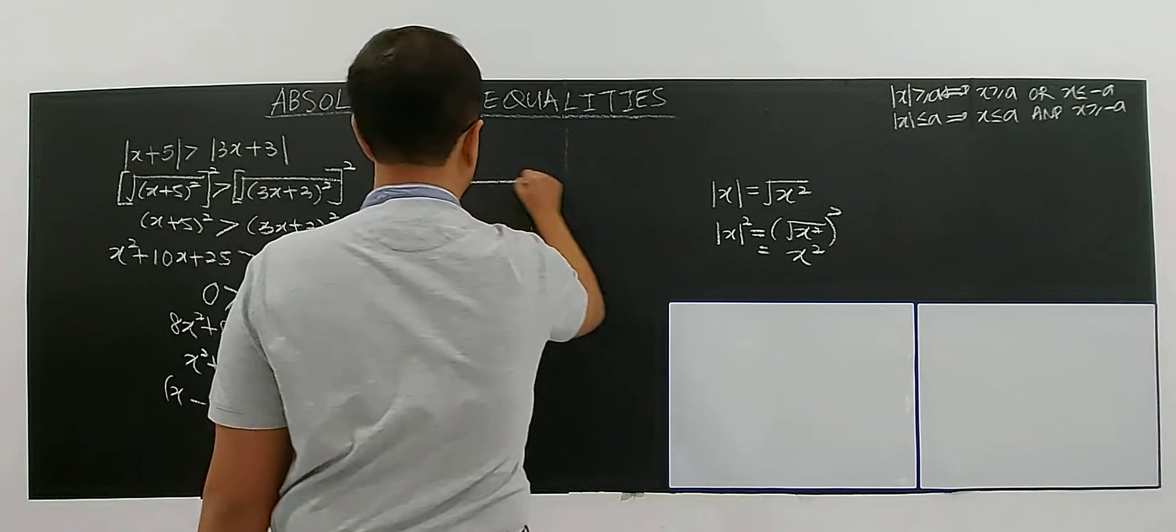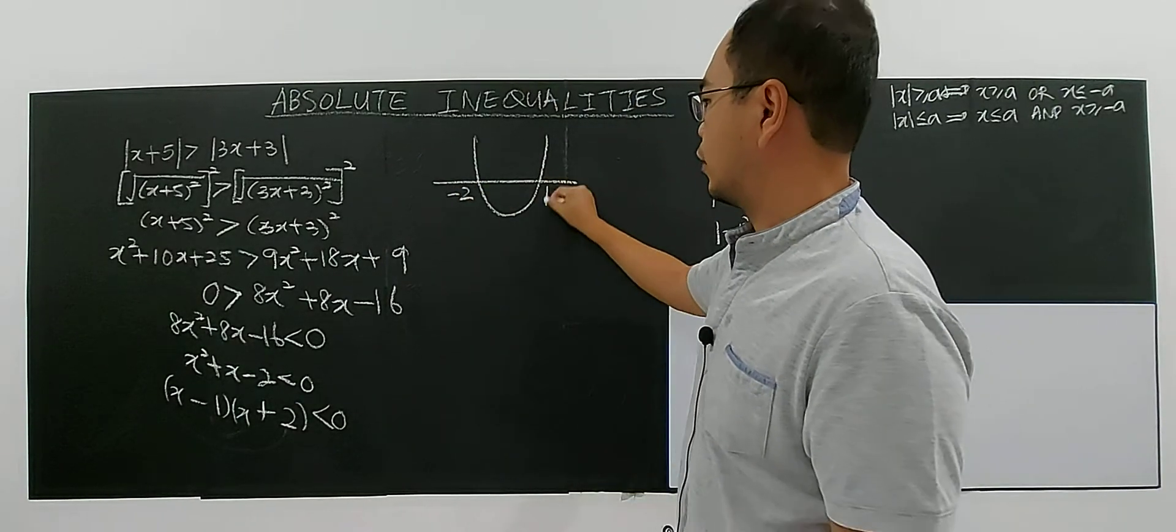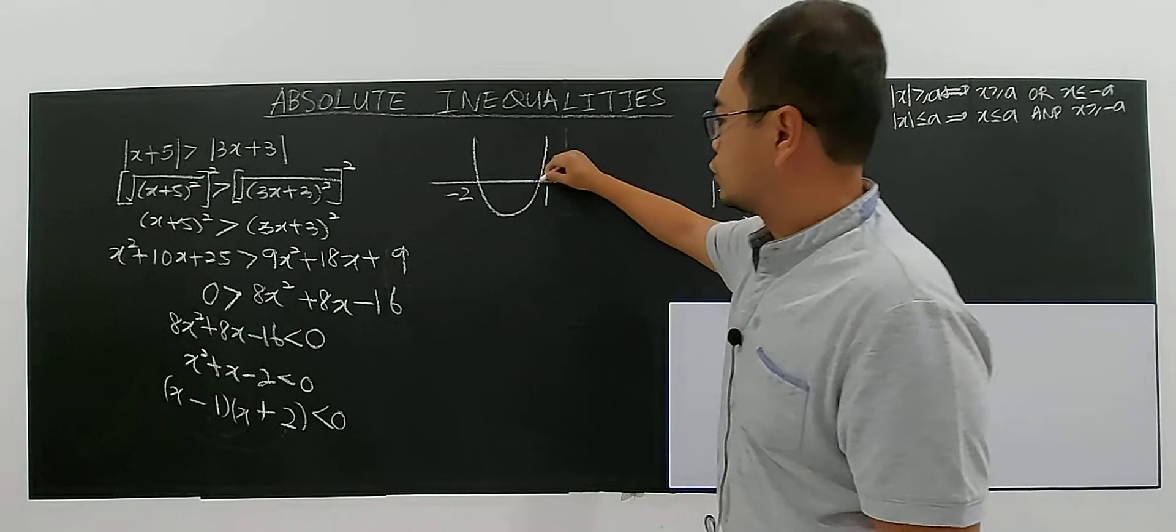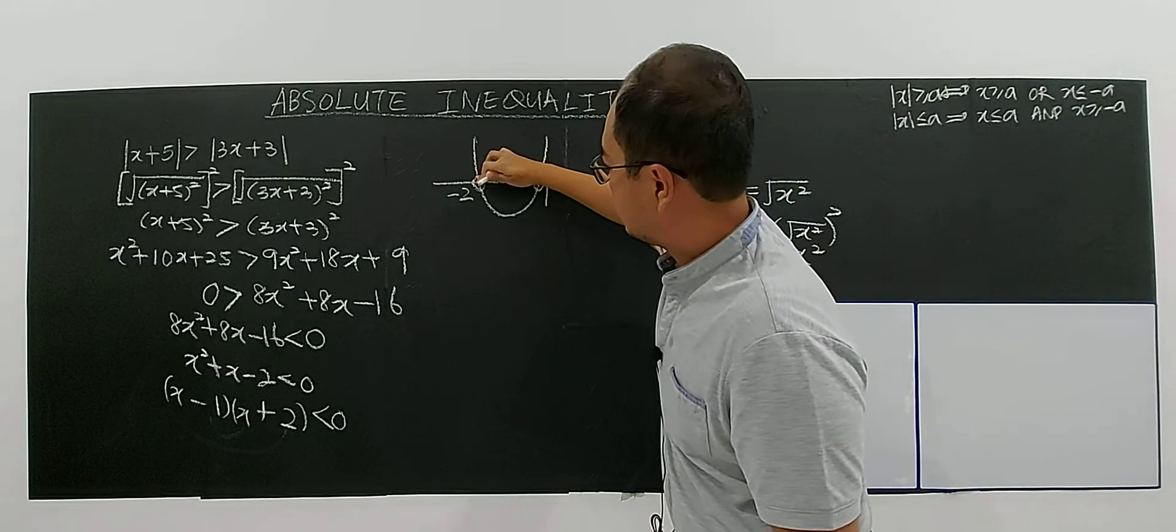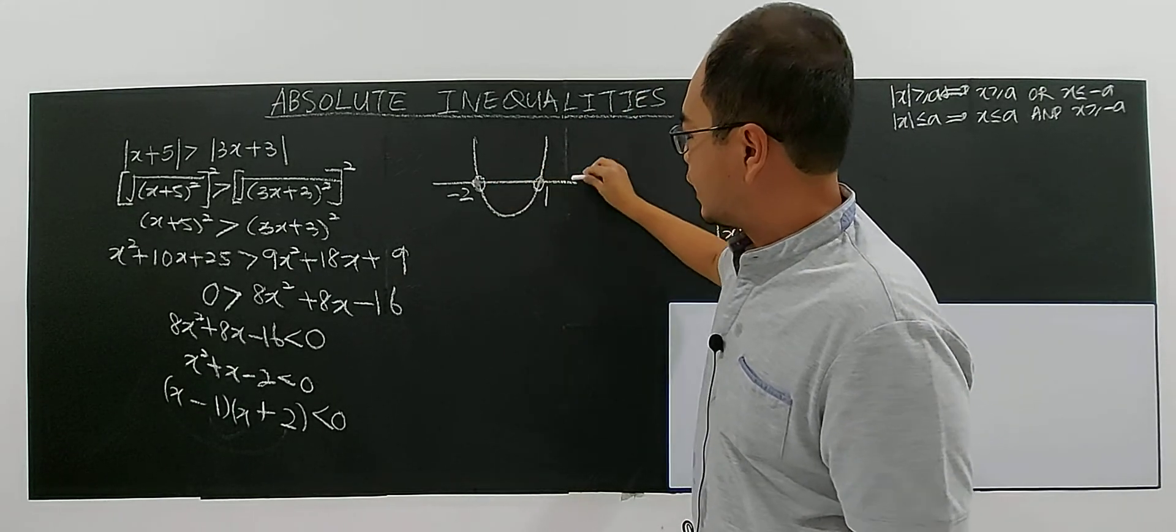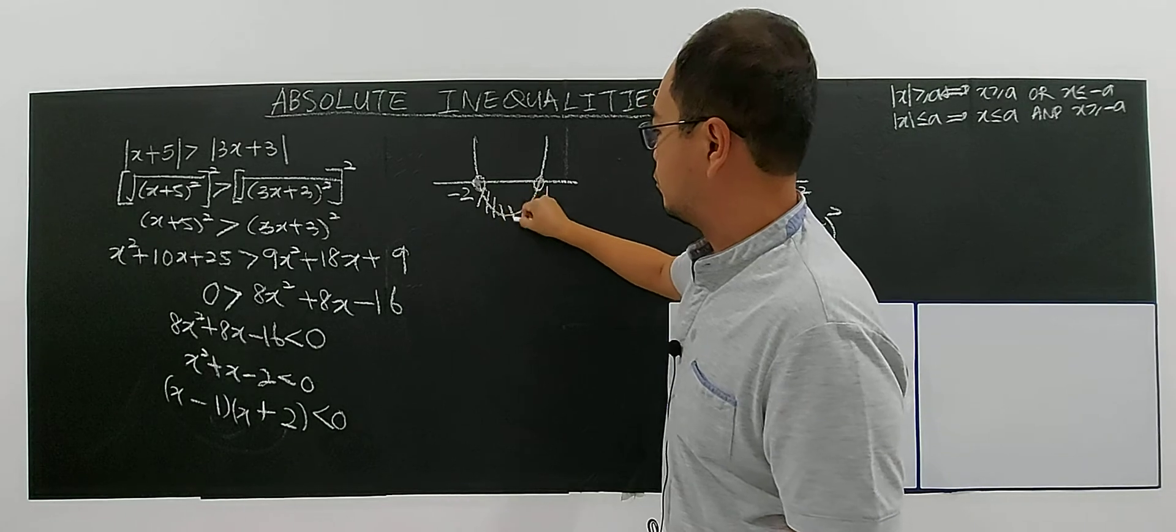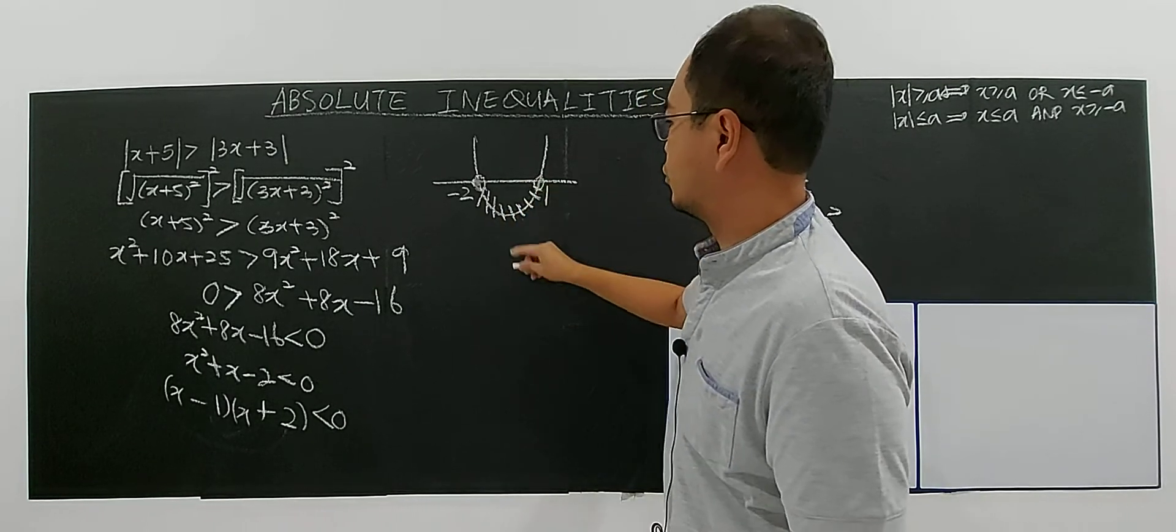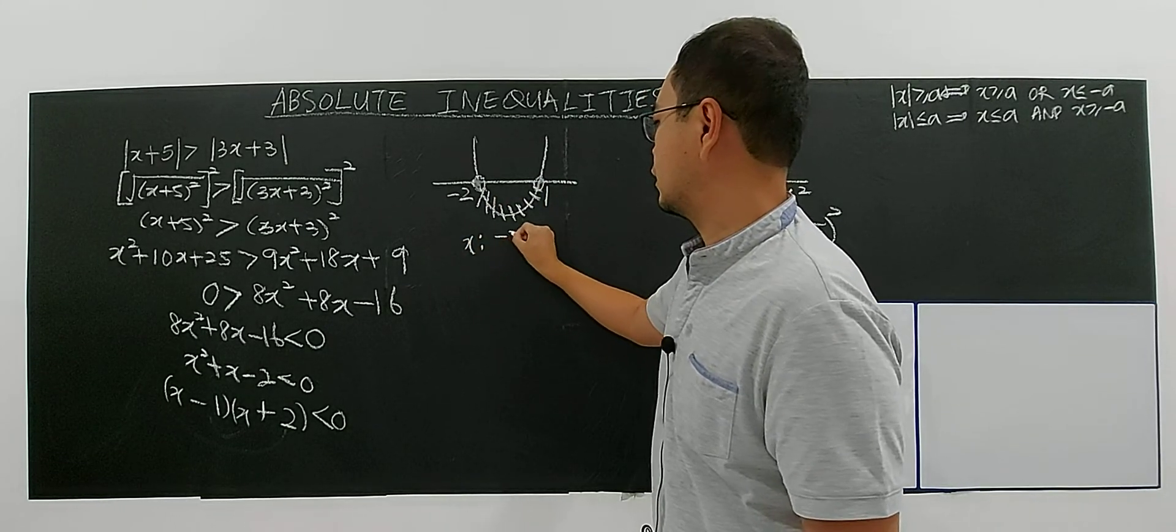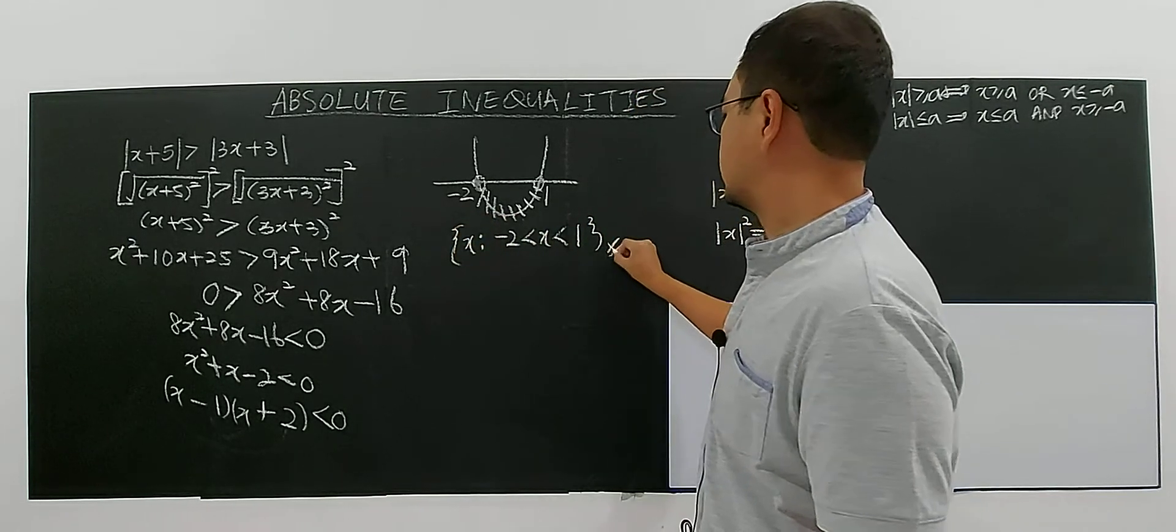You're using graphical approach. So you have negative 2 and 1. Not include. There are no equal here. Not include the negative 2 and 1. So, empty circles. Is it the curve below the x axis or the curve above the x axis? If less than zero, means that the curve below the x axis. So which is the region? The solution is x is between negative 2 and 1. So this will be your solution for this case.